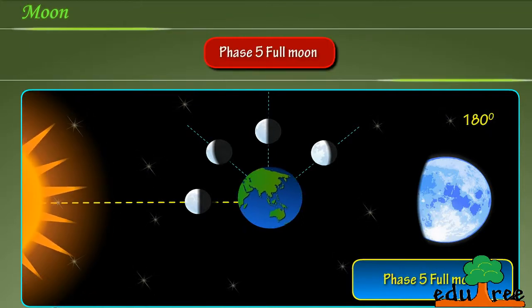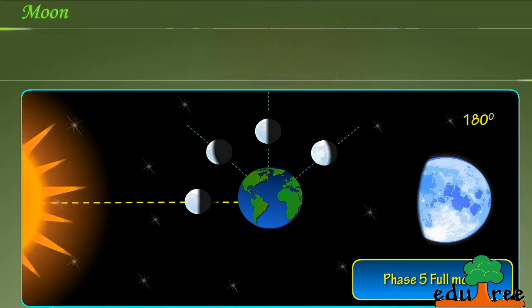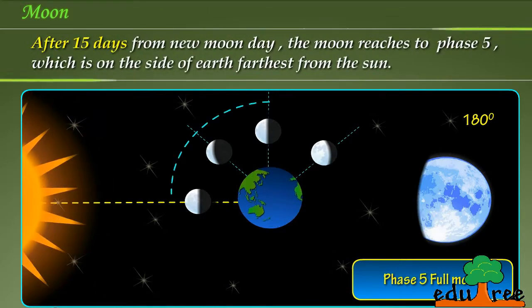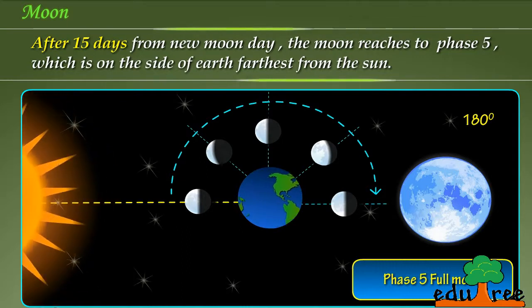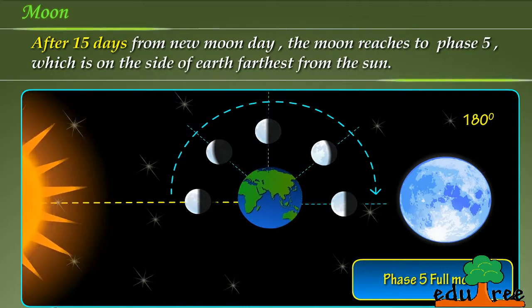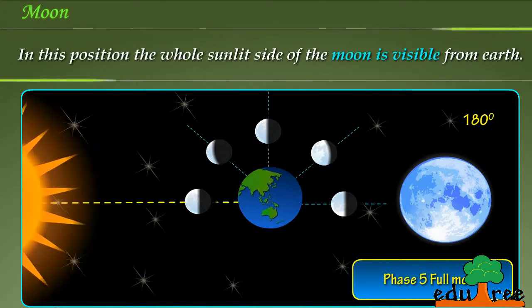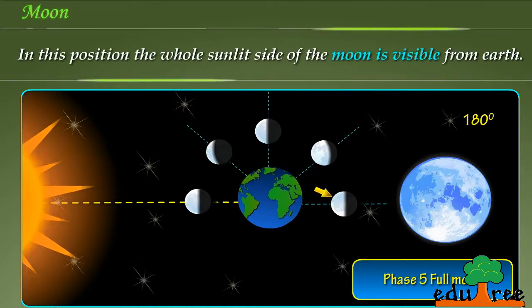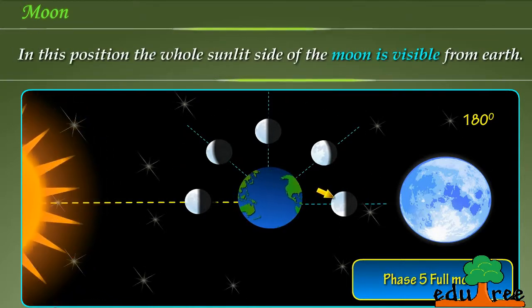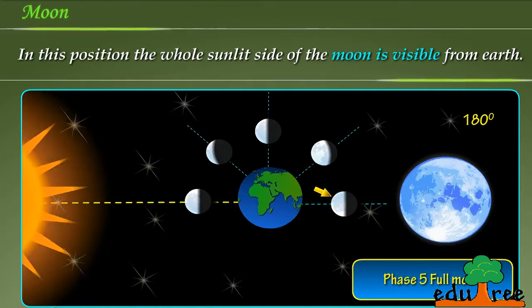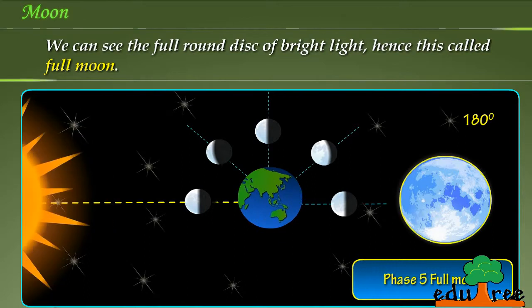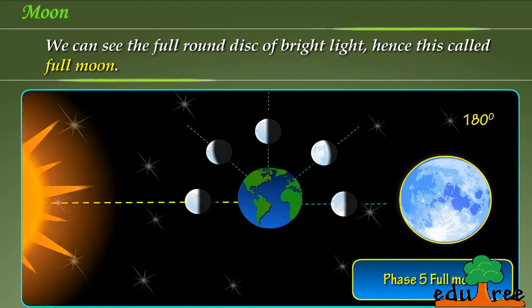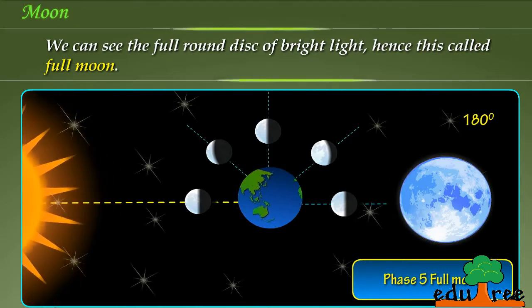Phase 5: Full moon. After 15 days from new moon day, the moon reaches to phase 5, which is on the side of earth farthest from the sun. In this position, the whole sunlit side of the moon is visible from earth. We can see the full round disk of bright light, hence this called full moon.